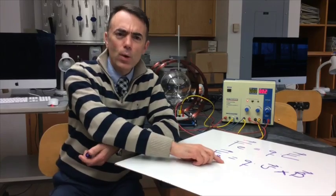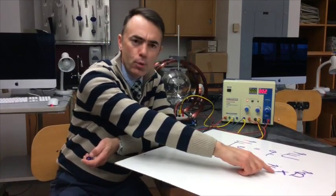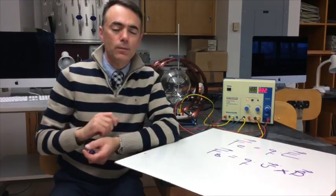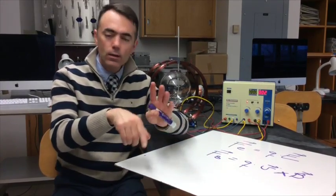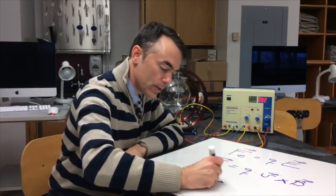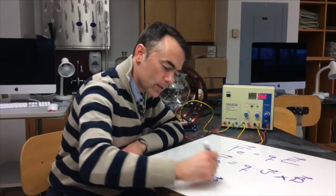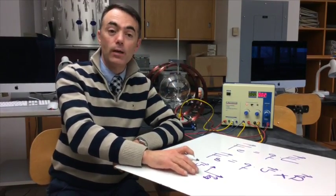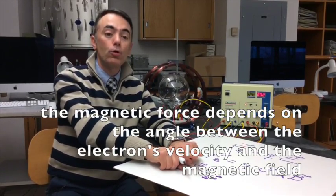Looking back at this equation, the magnetic force depends on the cross product of the vector velocity and the vector magnetic field. This means that this force depends on the angle between these two vectors. If these two vectors are perpendicular, the sine is going to be one, so we're going to have the maximum magnetic force. But if both vectors are parallel, there's not going to be any force.